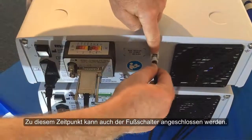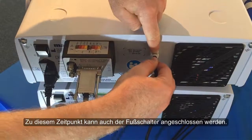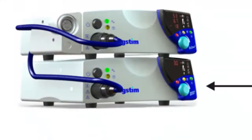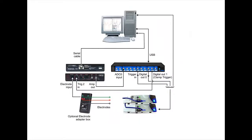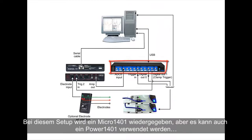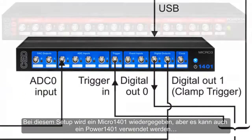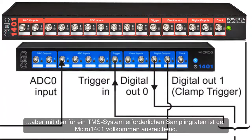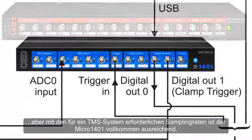At this point it would also be a good idea to plug in the footswitch. A Micro 1401 is shown in this setup. However, the Power 1401 may also be used, but with the sampling rates required for a TMS system, the Micro 1401 is ample.